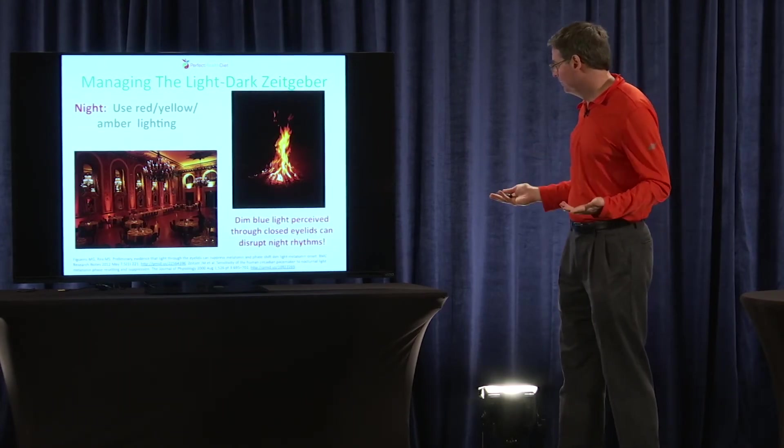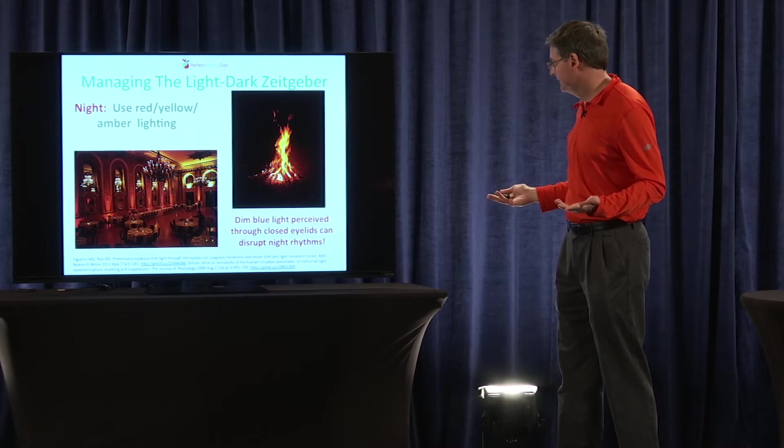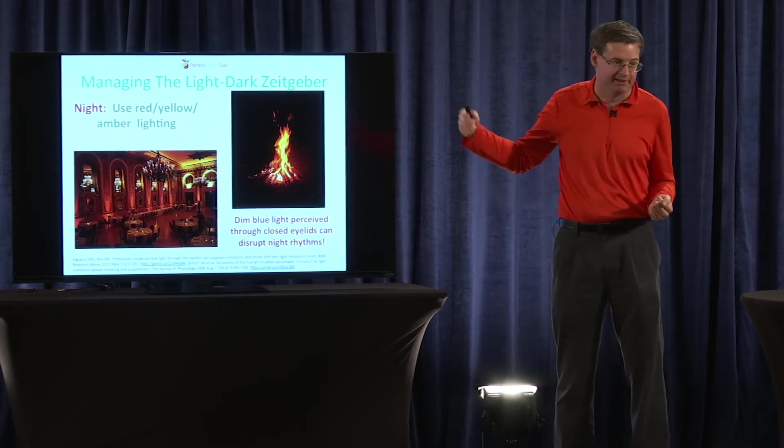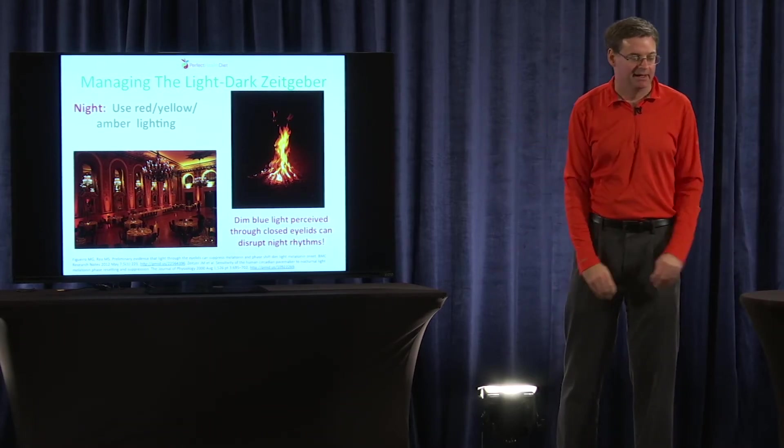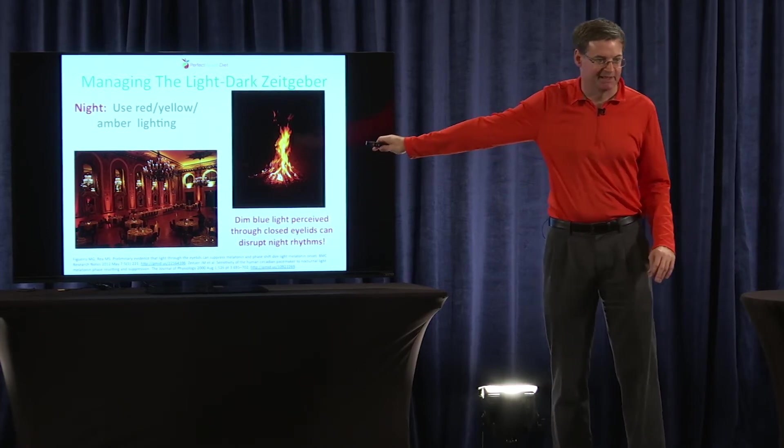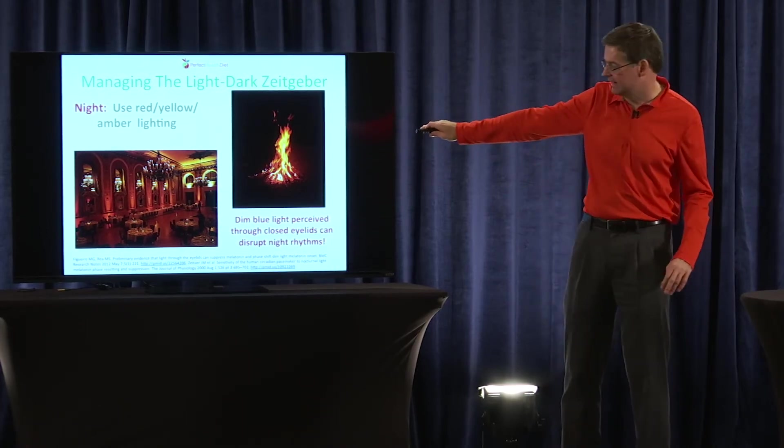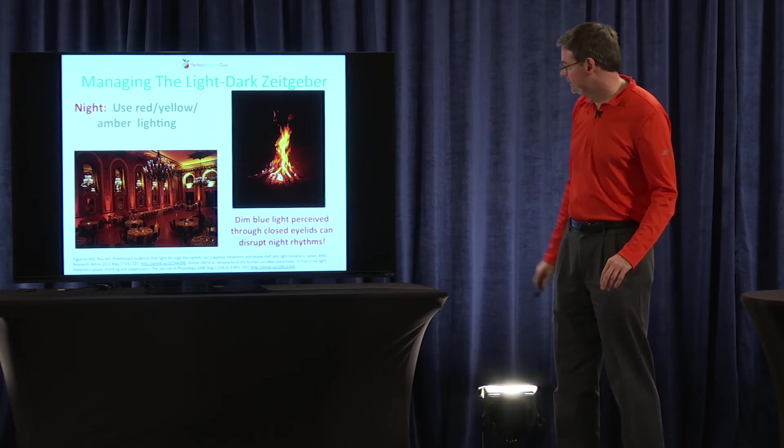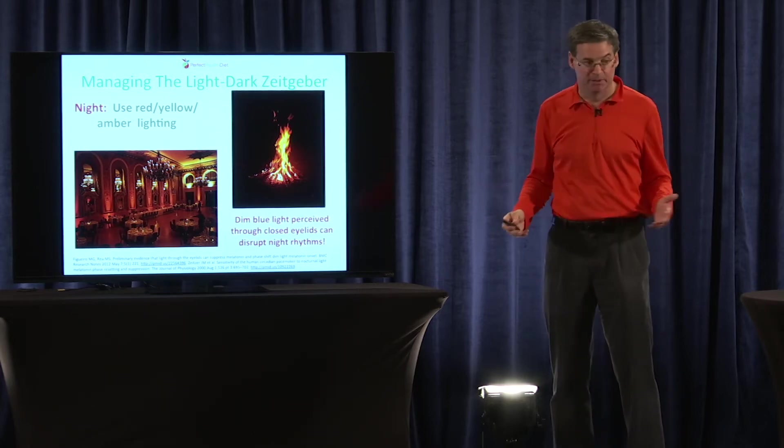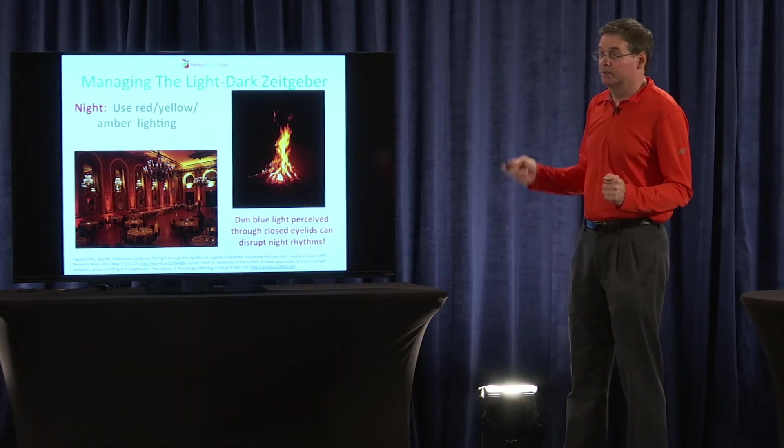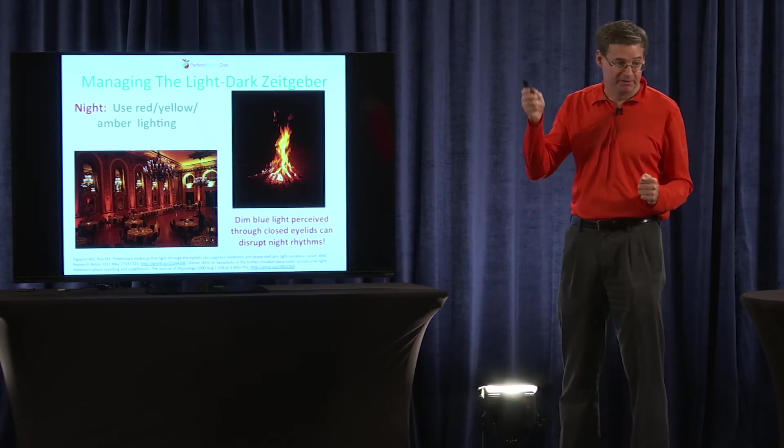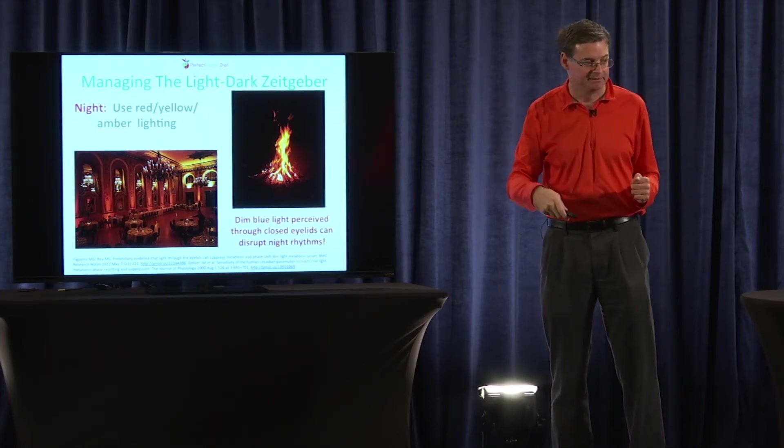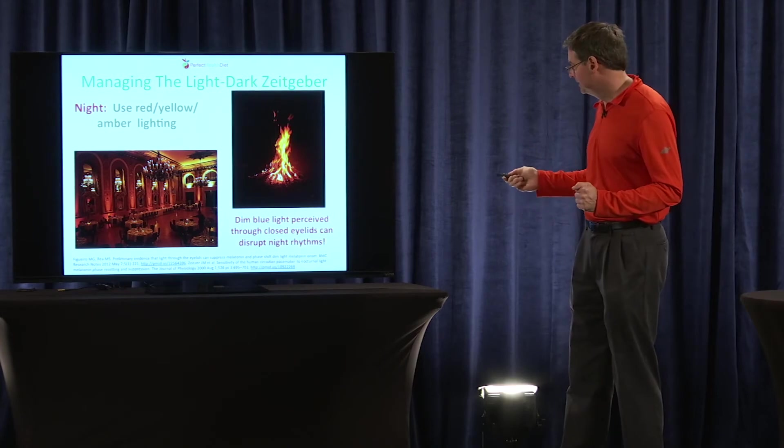And what should things look like at night? They should look like a campfire. Campfire, color temperature more like 600 Kelvin. And it's very red, very yellow, and very little blue. So these yellow lights, they have too much blue, they'll disrupt your night, but they don't have enough blue to entrain your day.